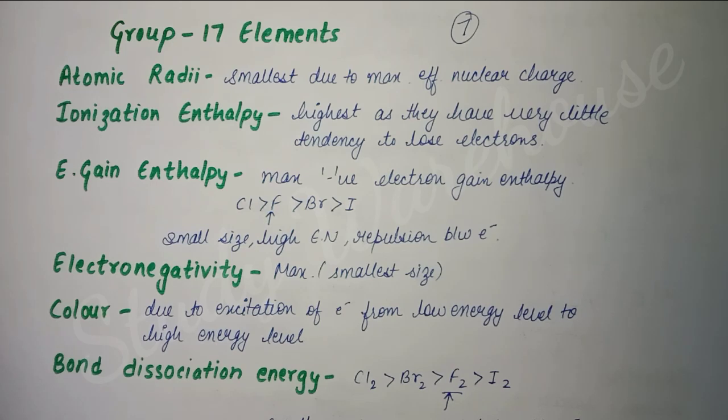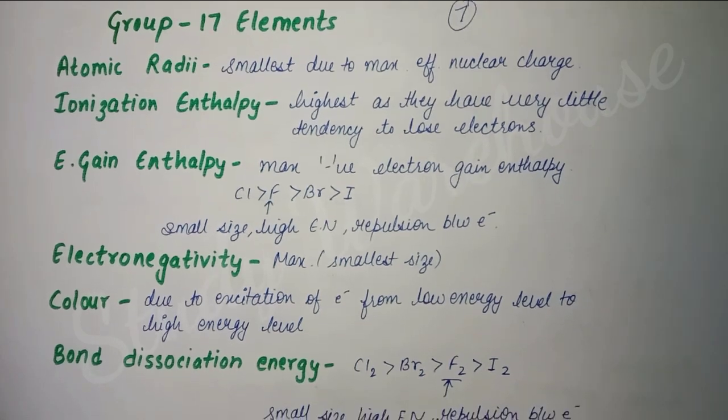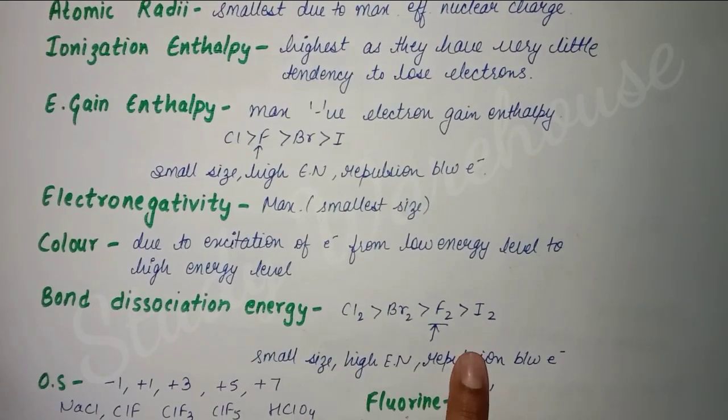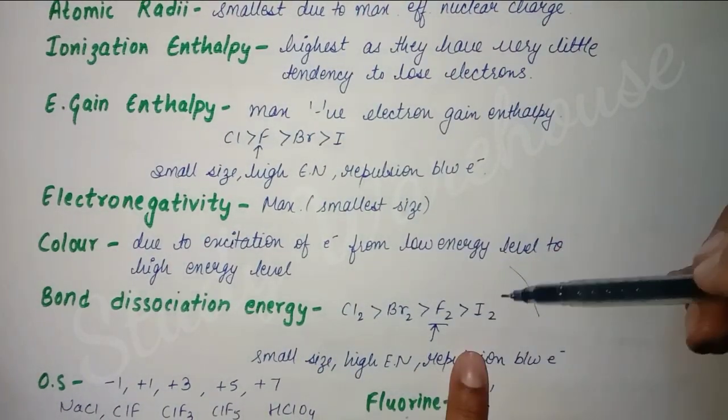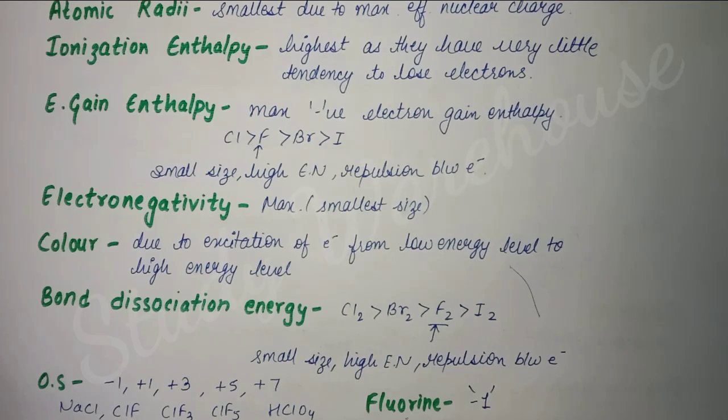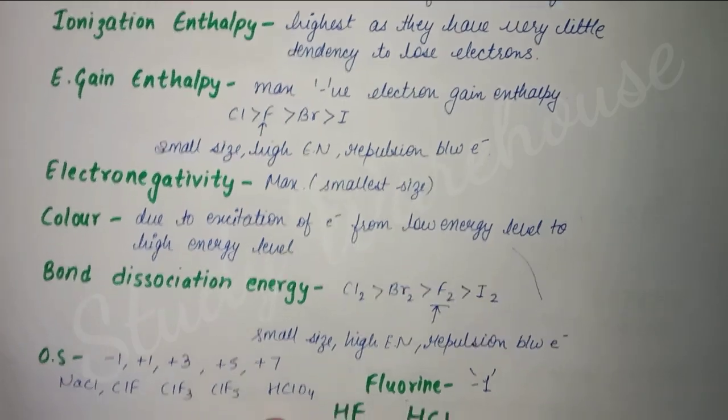For bond dissociation energy, the order is different. Chlorine has the highest, and fluorine is third. The reason here is also the same: due to small size and high electronegativity, the repulsion between electrons is very high, so fluorine's bond dissociation enthalpy is also lower.